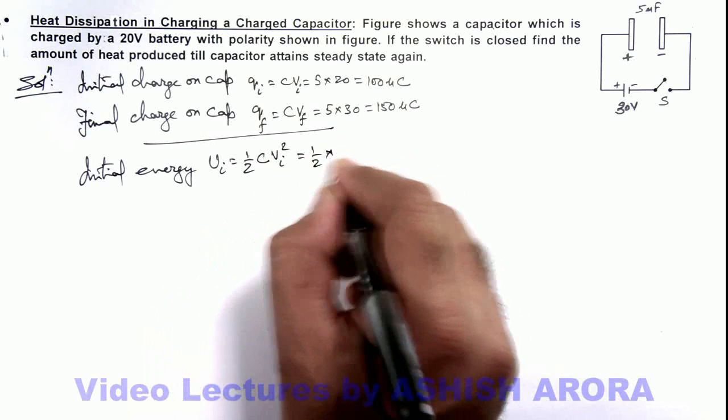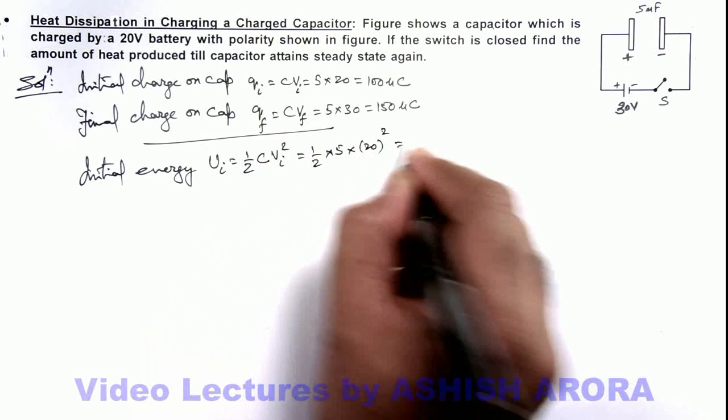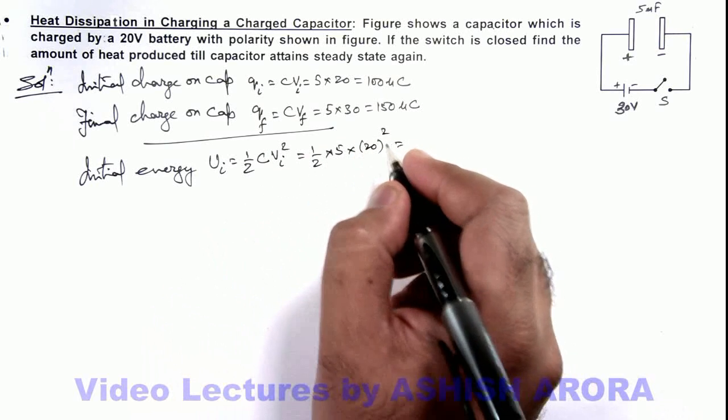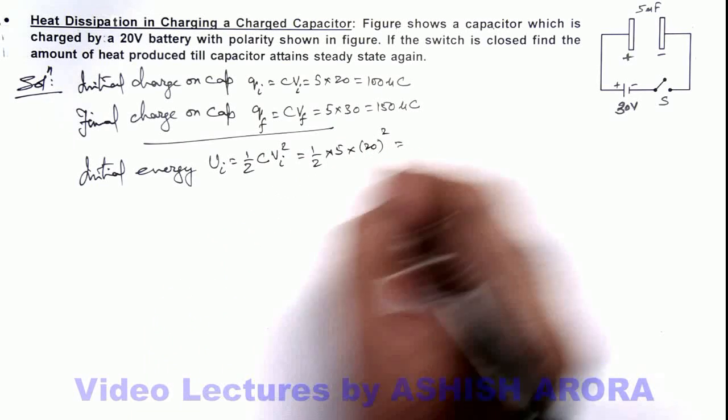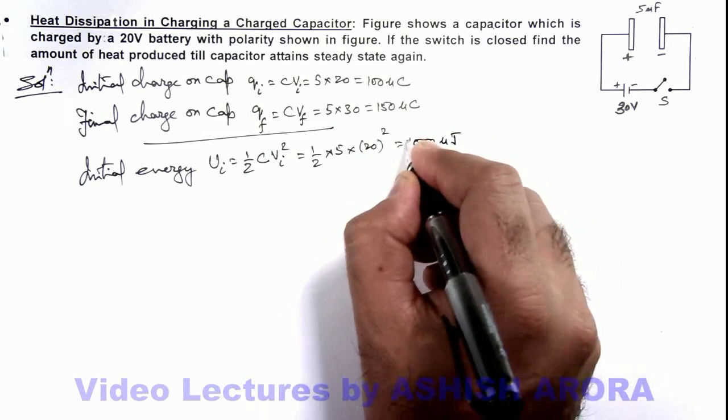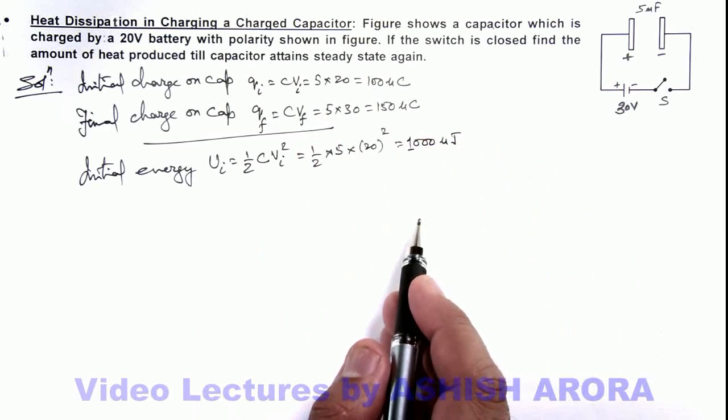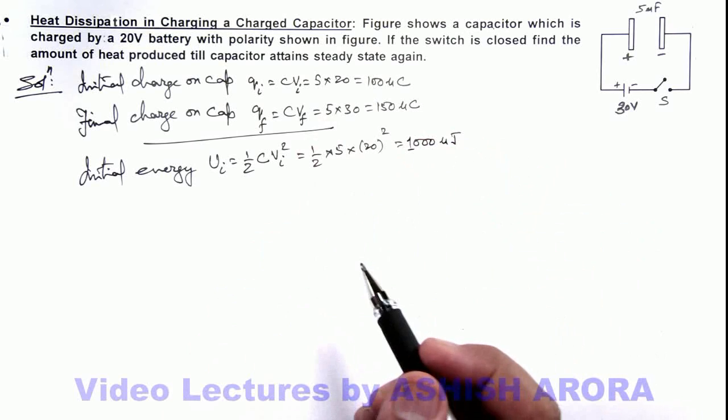This will be ½CV². So this will be ½ × 5 × (20)². So here the value is 2000 by 2. This is 1000 microjoule that can also be written as 1 millijoule, but here as all calculations are in microjoule, let it be as it is.